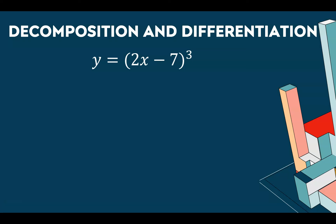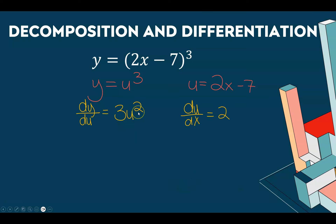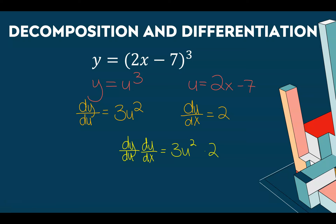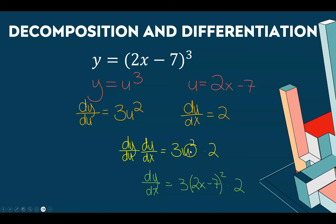For y = (2x−7)³, this is something cubed where the something is 2x−7. The derivative of something cubed is 3 times that something squared, so dy/du = 3u². The derivative of 2x−7 is 2, so du/dx = 2. Bringing it together: dy/dx = 3(2x−7)² · 2.